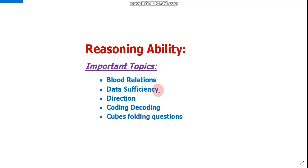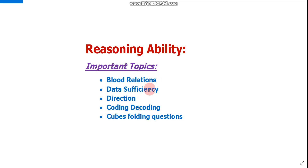Now let's move to Reasoning Ability. These are the five do-or-die topics: Blood Relations, Data Sufficiency, Direction, Coding-Decoding, and the fifth and very important topic — Cube Folding questions. Search cube folding questions on Google, practice at least 10 questions on this topic because it takes practice, and do at least five questions on the other four topics to easily clear the Reasoning Ability cutoff.